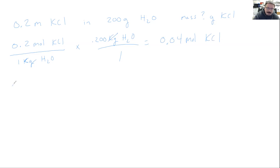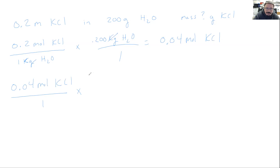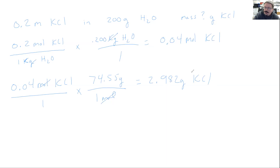Now the last step is to go from moles of potassium chloride to mass of potassium chloride using the molar mass. Potassium chloride: 39.1 plus 35.45 gives 74.55 grams per mole. Multiply 74.55 by 0.04 moles and we get 2.982 grams of potassium chloride — that's how much we need to dissolve in 200 grams of water to make the 0.2 molal solution.